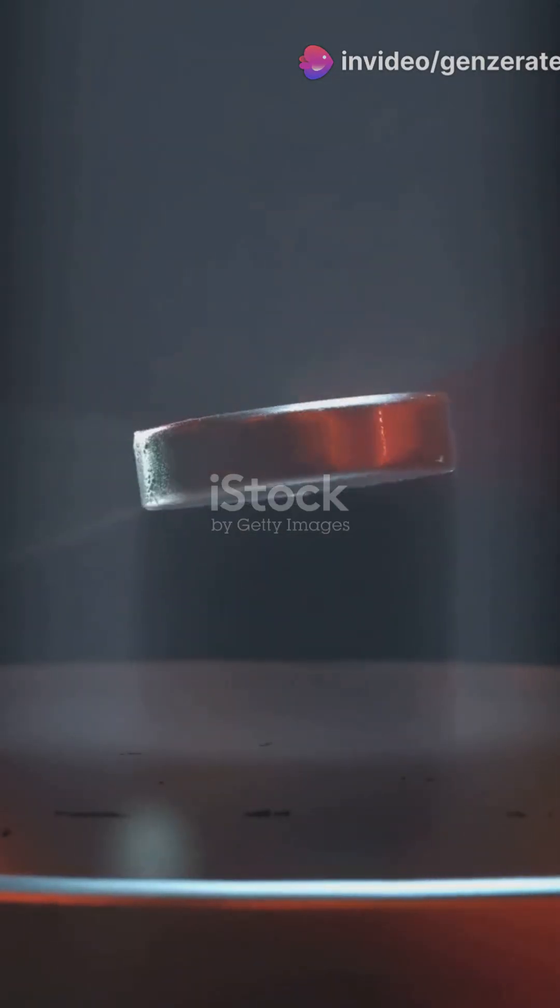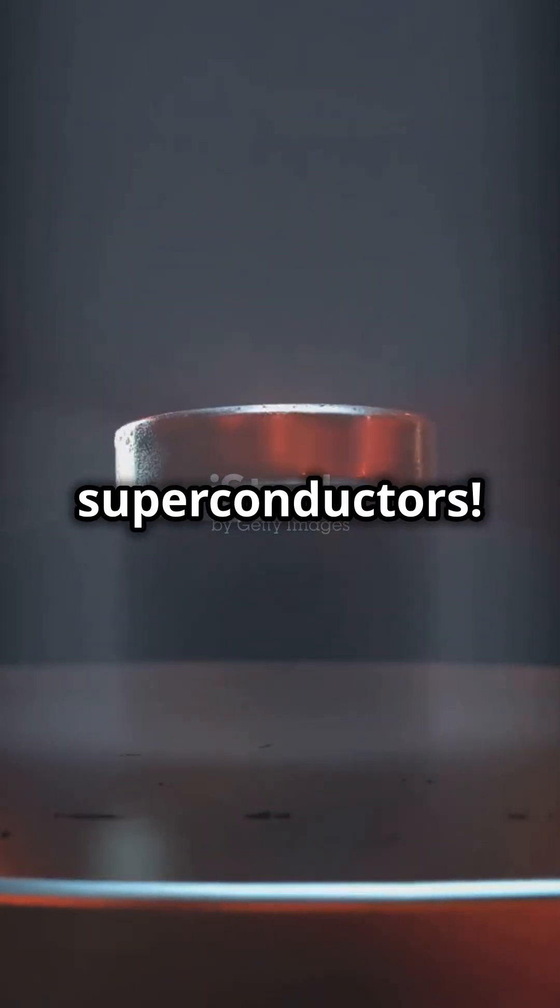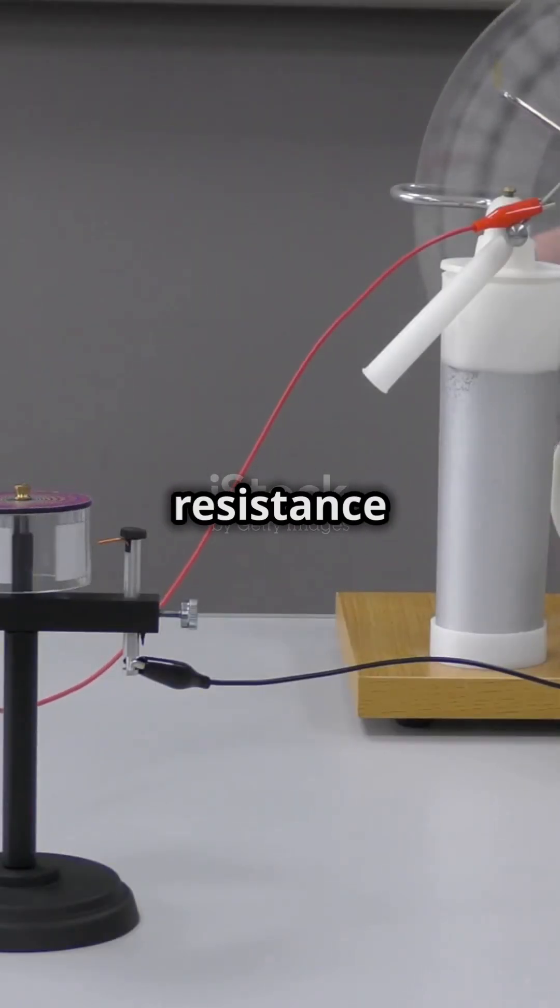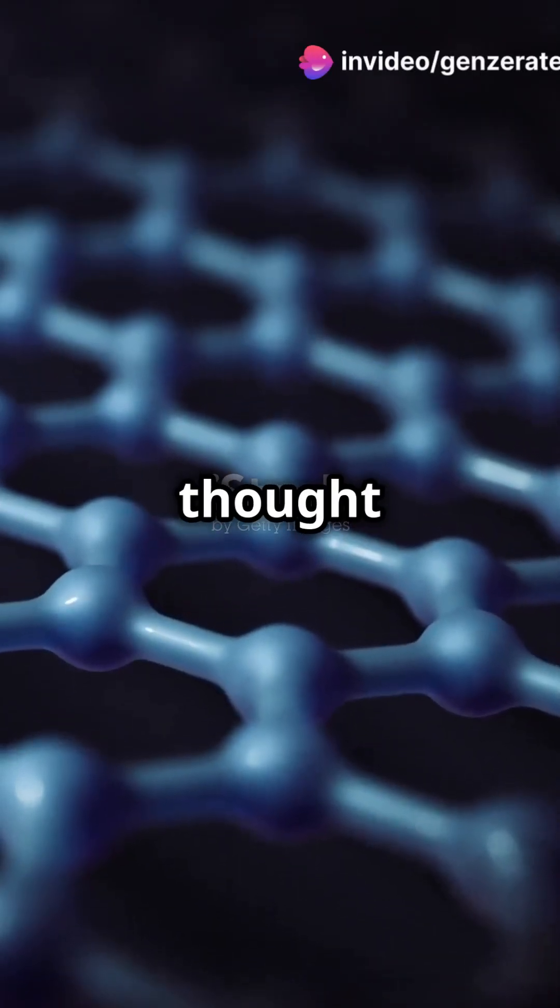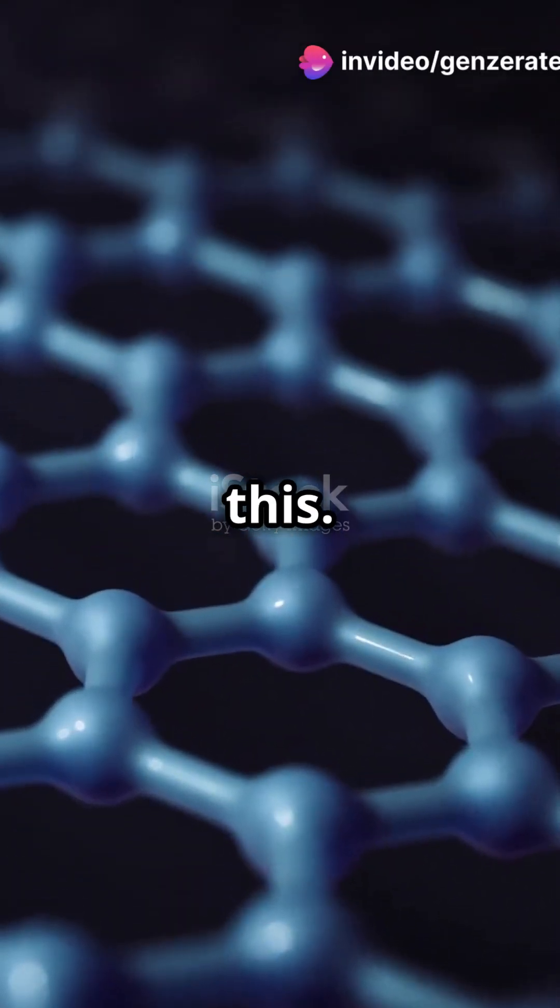But here's the kicker, they can become superconductors. Superconductivity means zero electrical resistance and magnetic field expulsion. Previously, we thought only graphene-based moiré materials could do this.